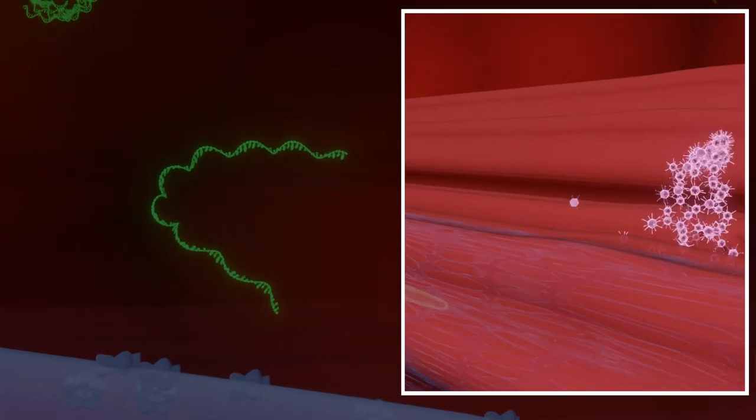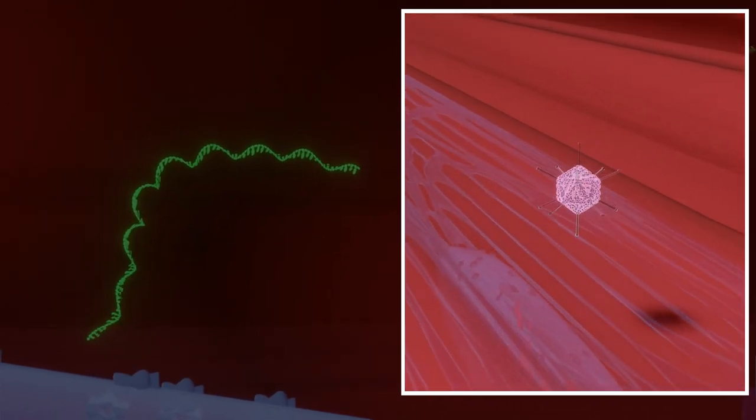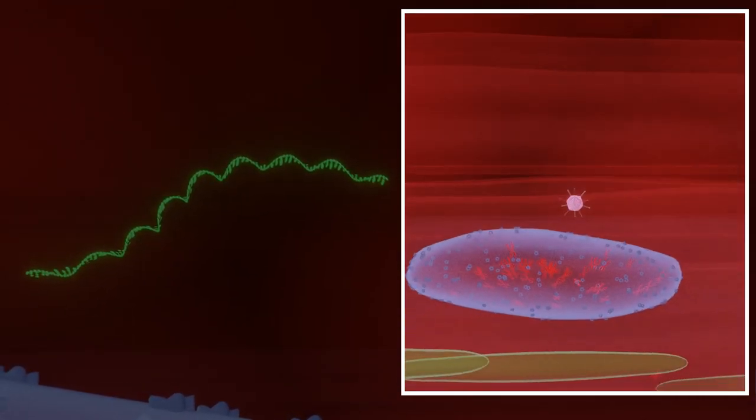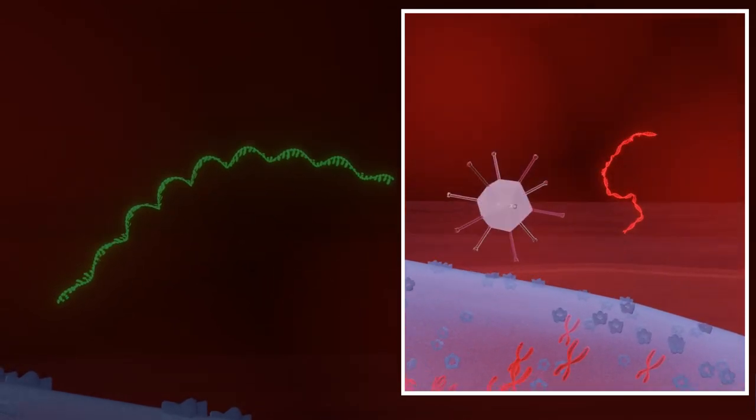Other vaccine types, for example those from AstraZeneca and Johnson & Johnson, are given as DNA inside another virus, which is not coronavirus. They are called viral vector vaccines.